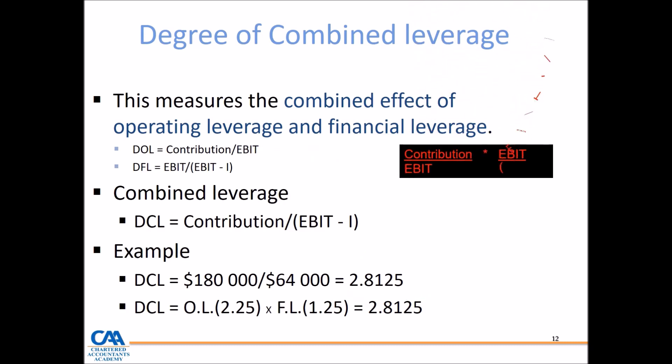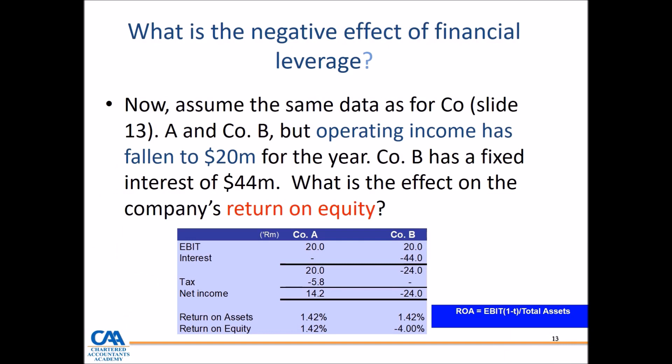Looking at the negative effect of financial leverage: if operating income falls to $20 million and Company B has fixed interest of $44 million, Company B shows a negative net income — a loss. Return on equity for Company B becomes negative 4%. This happens because Company B carries more financial leverage, so the return to equity shareholders falls sharply, while the return to debt funders remains fixed through the contractual obligation.